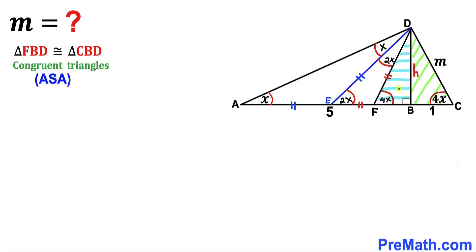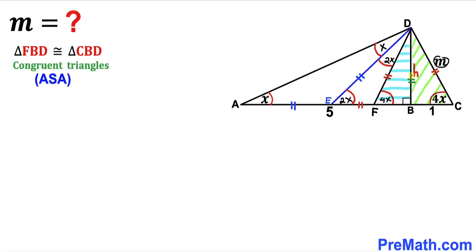Now let's focus on these two right triangles FBD and CBD. This angle is congruent to this angle. This angle is 90 degrees, and this angle is 90 degrees as well, and this is our common side. So therefore we conclude that these two right triangles are congruent according to the angle-side-angle congruency theorem. Therefore this side length is going to be equal to this side length.